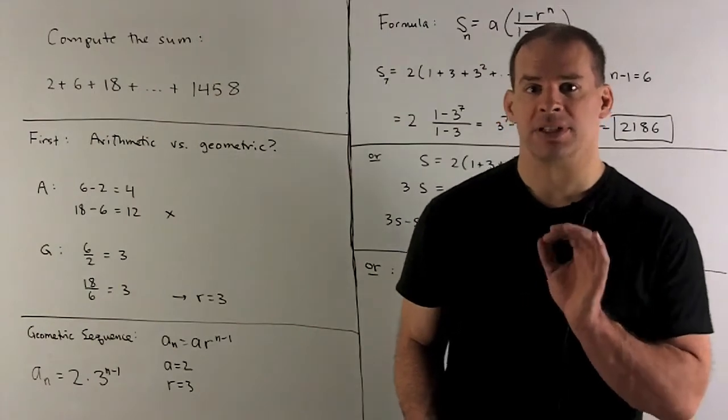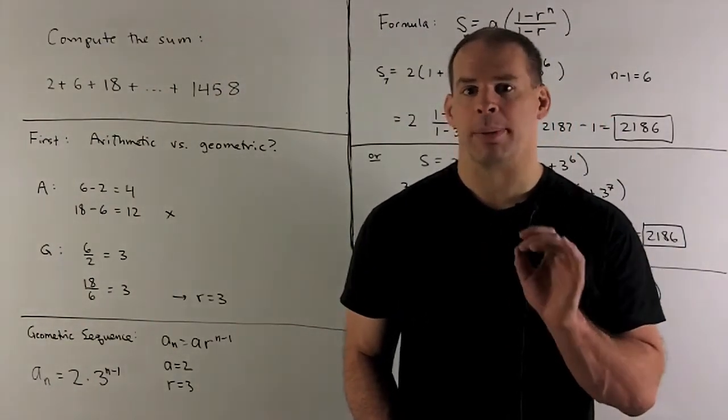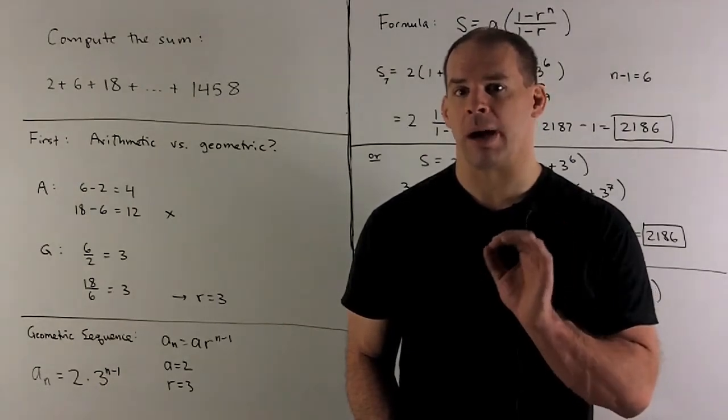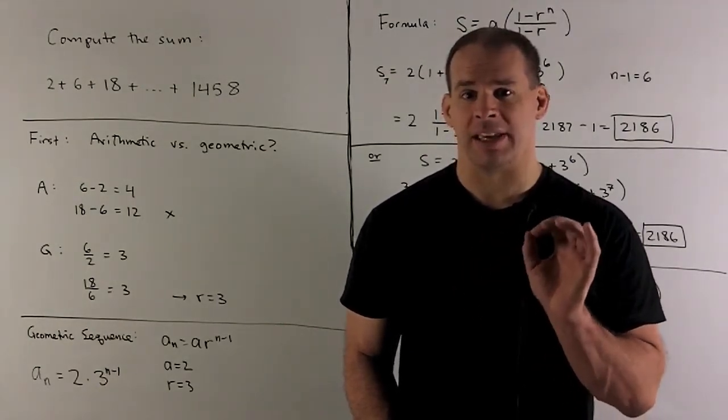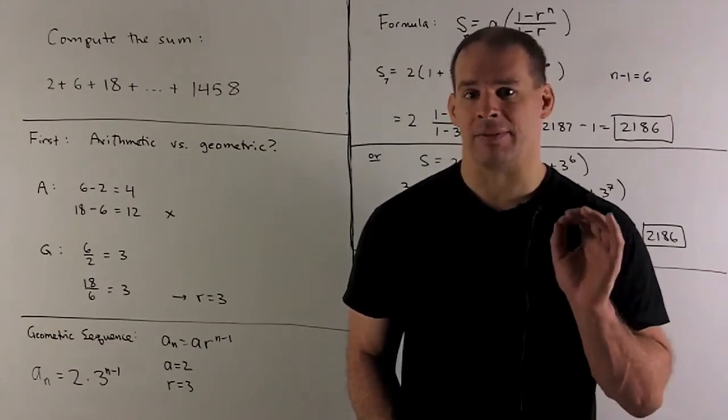How about geometric? Same idea. I have my first term. I get all following terms by multiplying by a fixed number, the common quotient. We get that by taking any two consecutive terms, take the quotient. That never changes.